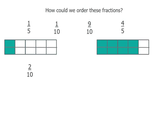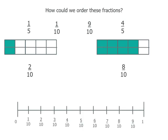And 4 fifths, if we rule a line there, is the same as 8 tenths. So if we split our number line into 10 equal parts: 1 fifth is the same as 2 tenths, 2 fifths is 4 tenths, 3 fifths is 6 tenths, and 4 fifths is 8 tenths. We can now plot our numbers: 1 fifth sits on the 2 tenths mark, then 1 tenth, 9 tenths, and 4 fifths at the 8 tenths mark. The smallest is 1 tenth and the largest is 9 tenths — we used the same denominator to plot them all on a number line.